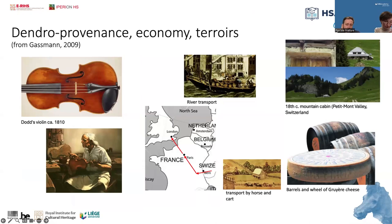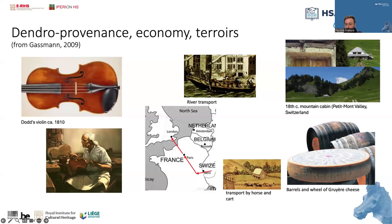The violin just presented by Pascal allows me to take up another example from a study by Patrick Gassman, a Swiss dendrochronologist. This study established a link between violins made in England at the beginning of the 19th century and mountain houses built in Switzerland in the middle of the 18th century. During this period, Gruyère cheeses were exported from Switzerland to several destinations including London. These cheeses were stored in spruce barrels, and this wood could be reused to make violins in London or Paris workshops. This study also led to the discovery that the spruce wood could have come from a particular valley in western Switzerland.